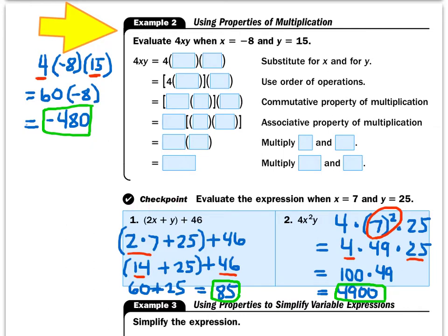For the checkpoint, evaluate these expressions when x equals 7 and y equals 25. First, rewrite with the values: 2 times 7 plus 25 plus 46. In order of operations, we multiply before adding, so 2 times 7 gives us 14. Now we have 14 plus 25 plus 46. It's smarter and faster to add 14 plus 46 first — that gives us 60 — and then 60 plus 25 gives us 85.